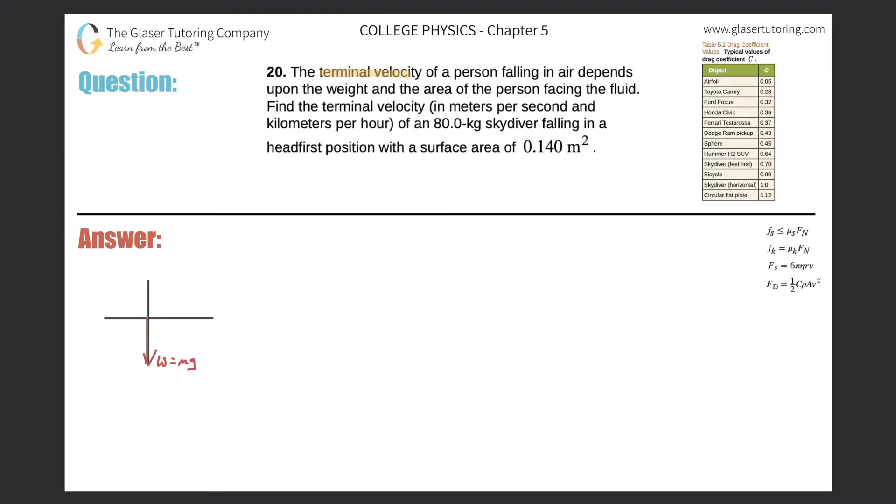Number 20. The terminal velocity of a person falling in air depends on the weight and the area of the person facing the fluid. Find the terminal velocity in meters per second and kilometers per hour of an 80 kilogram skydiver falling in a headfirst position with a surface area of 0.140 meters squared.